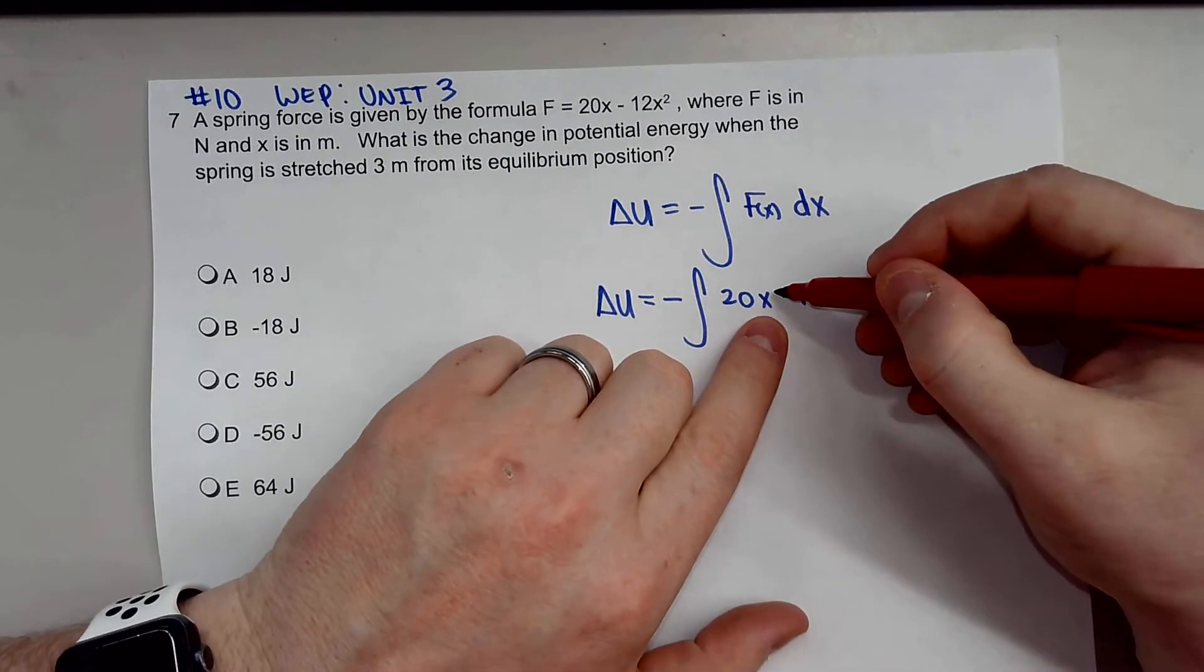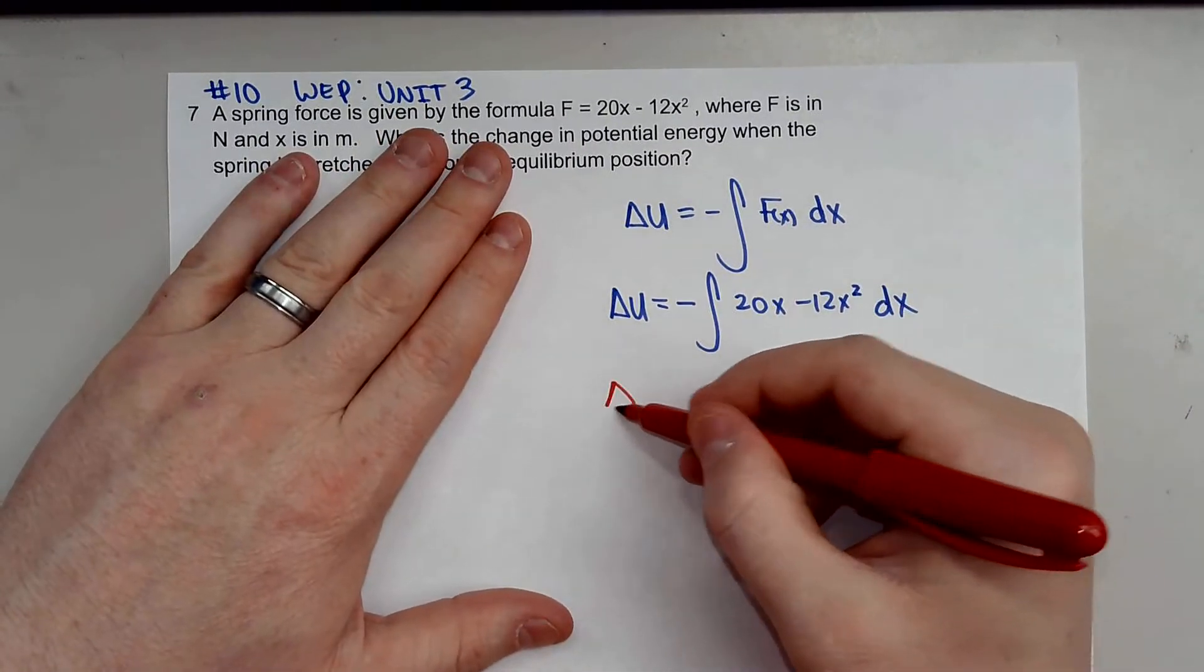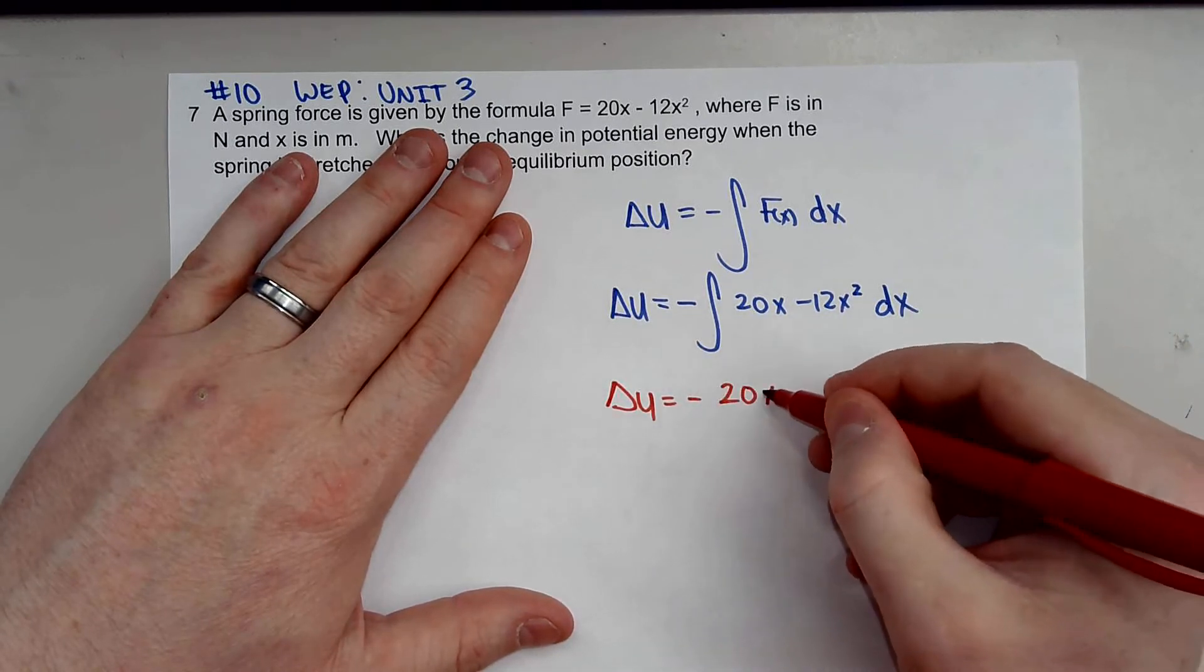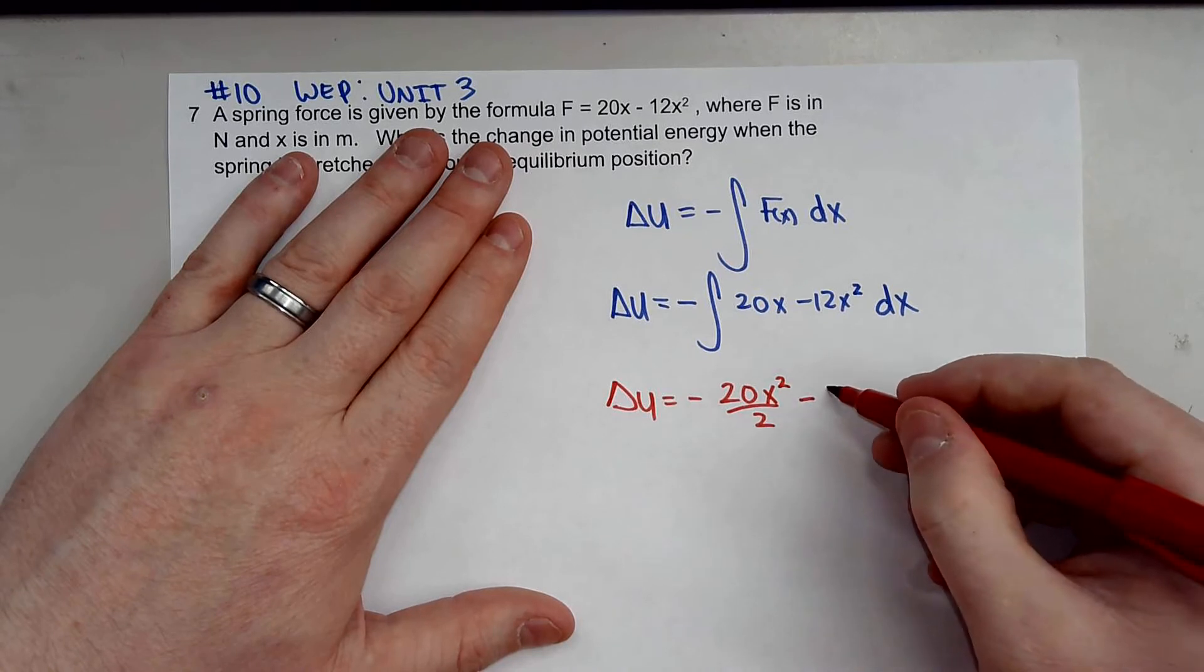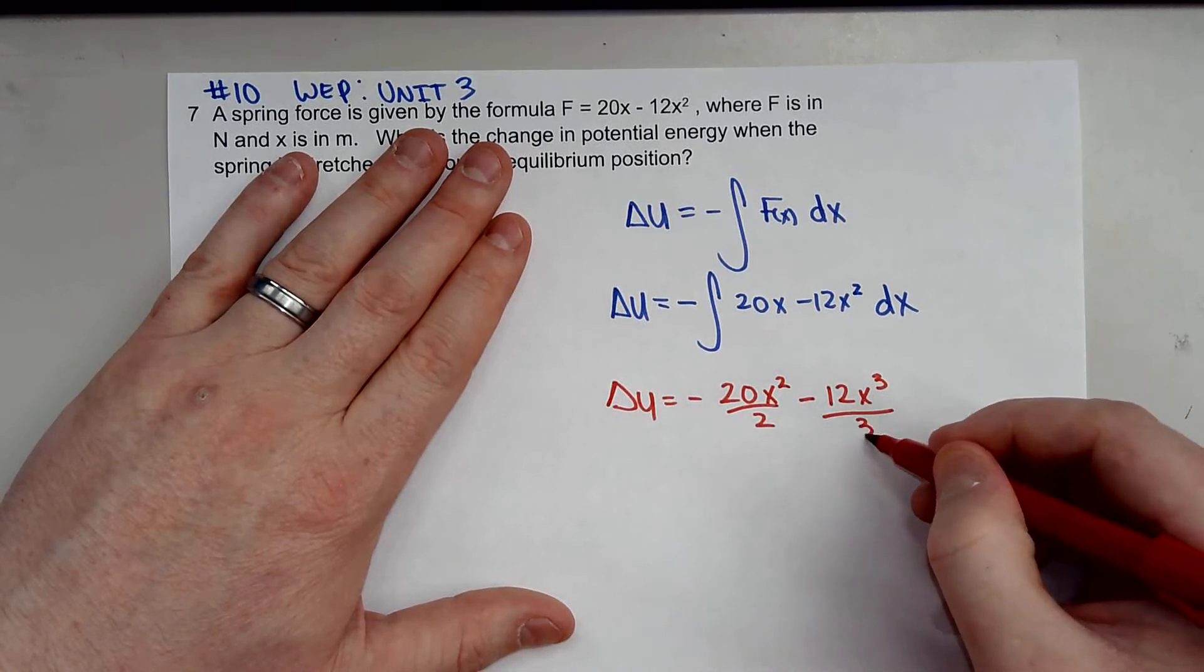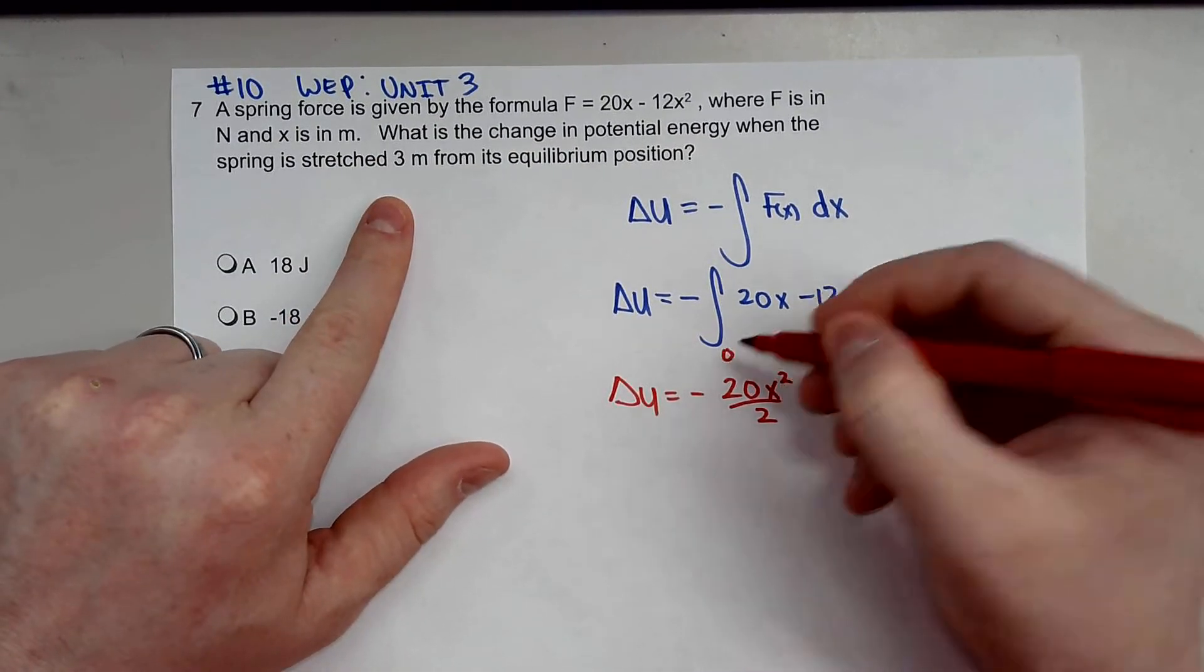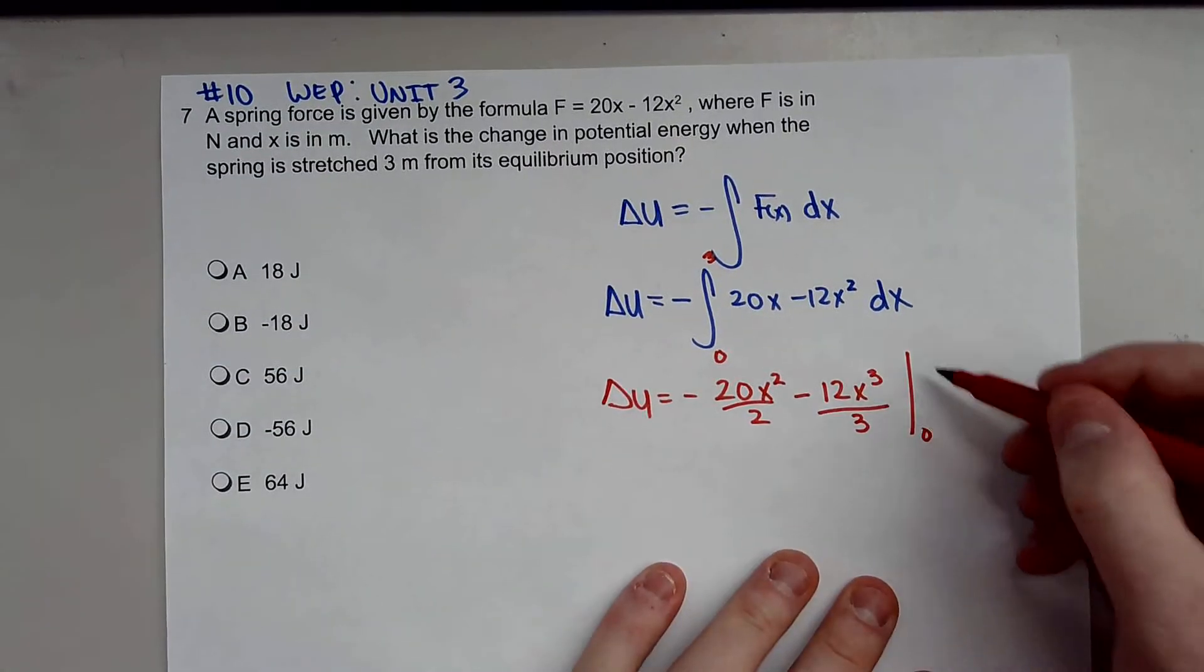Remember, when you integrate, you raise this to the power by 1 and then you divide by that same power. Don't forget this negative right here. This is going to be 20X squared over 2 minus 12X to the third over 3. And then we're going to integrate that from 0 to 3 meters.